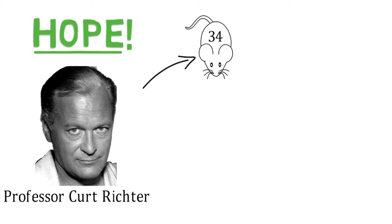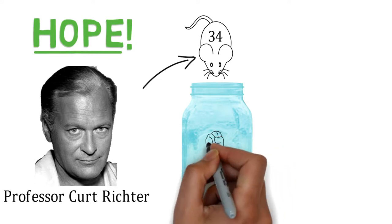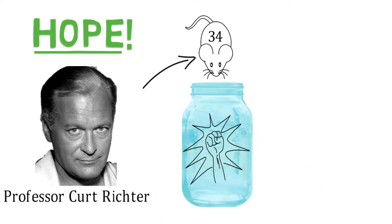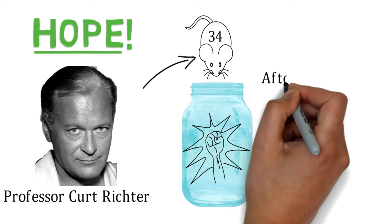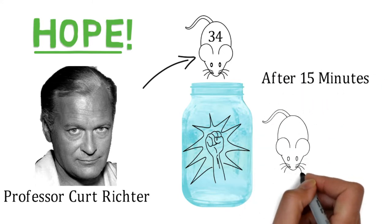He took 34 mice, placed them inside of a jar full of water, and left them to examine how long they were able to swim until they gave up and drowned. The mice tried to swim, struggling with all their power to get out of the jar. But, in vain, after 15 minutes, some gave up and drowned to death.